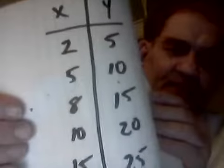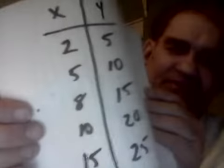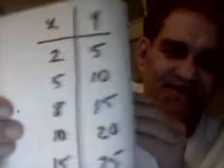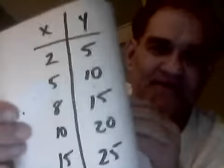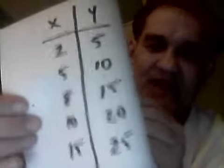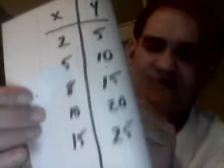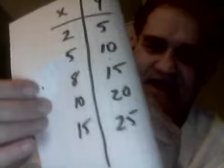Let's say the following are my points to plot — X and Y. X is going to be the number of hours it takes to count 5 bushels of dirt. So: 2 hours to count 5 bushels of dirt. What if it's 5 hours? You'd get 10 bushels. How about 8 hours — 15 bushels. Then 10 hours for 20 bushels of dirt. And then 15 hours for 25 bushels.